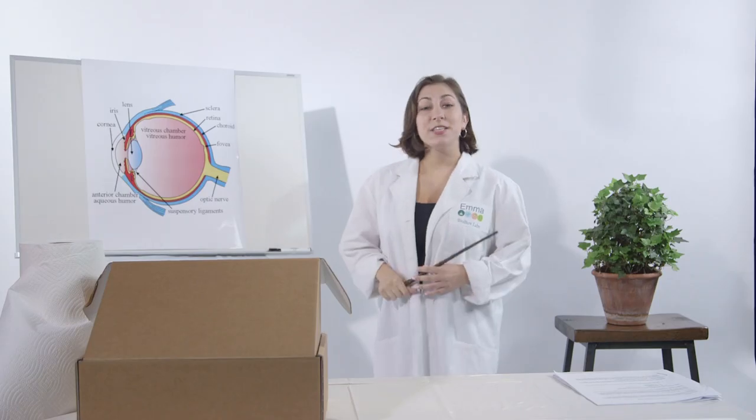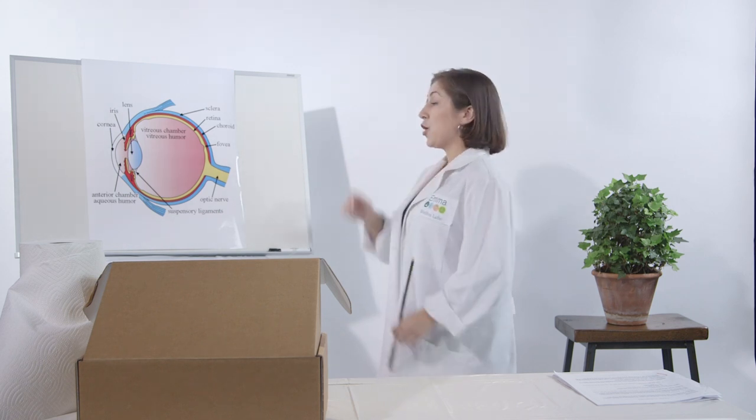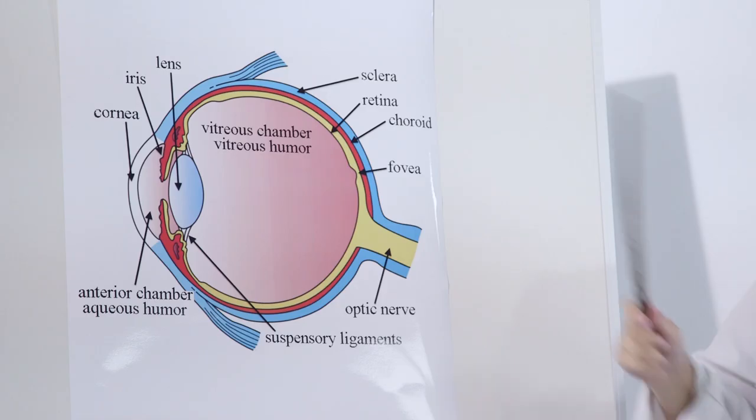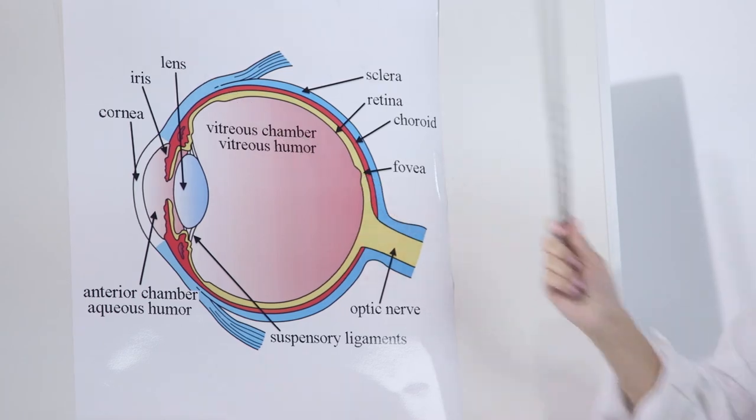So in today's box, we're going to be learning all about the eye and all about the different structures of the eye and what the eye does. Now, we're starting off with the sheep's eye. I know you may be thinking, that's disgusting. However, a lot of people have said that it's their favorite part of the box. So this is a picture of the eye that's in your lab book. As we do the experiment, you can follow along to see all the different parts of the eye.